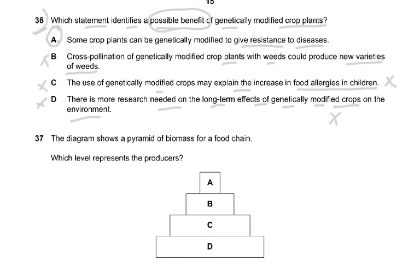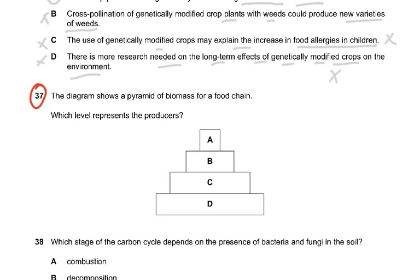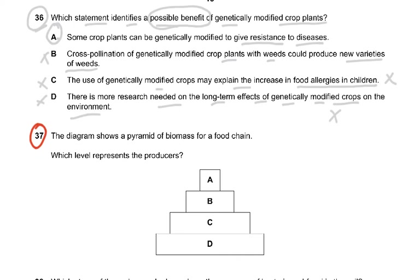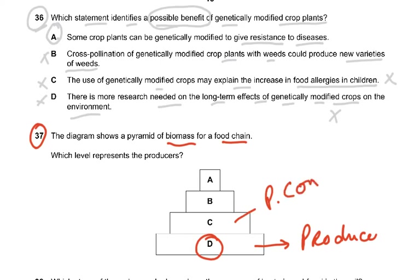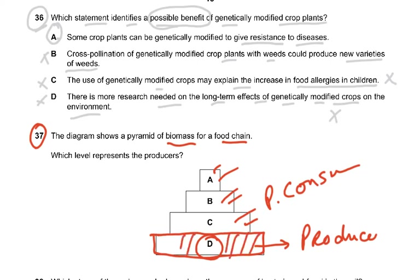Question 37: the diagram shows a pyramid of biomass — which level represents the producers? In any food chain, the first and largest level is always the producer. So the answer is D. Above that are the primary consumer, then secondary consumer, then tertiary consumer — for example, a tree, then caterpillars, then birds, then eagles.